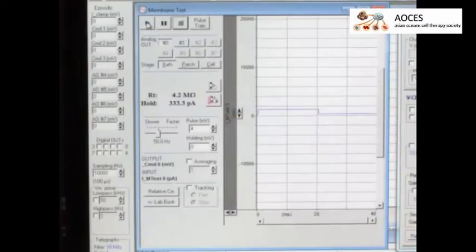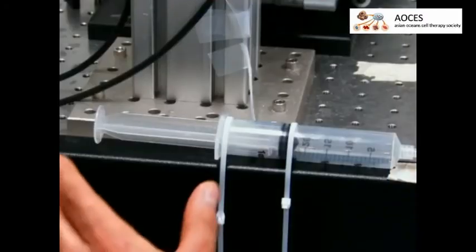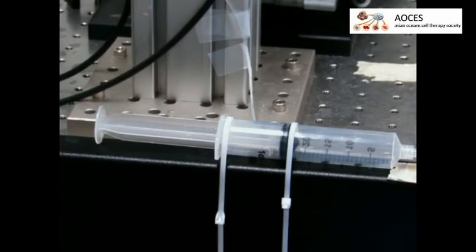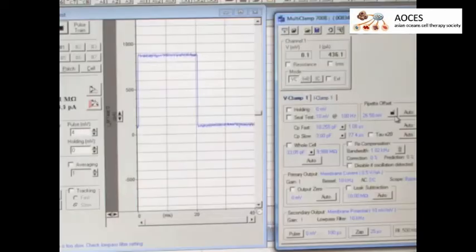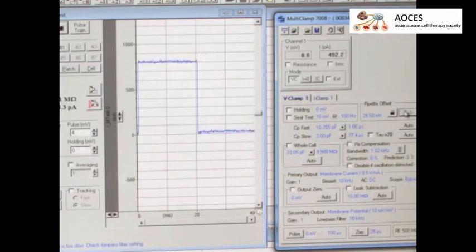In the meantime, measure the micropipette resistance by applying a voltage step. Apply positive pressure in order to remove any air bubbles or other foreign objects blocking the micropipette. After clearing the micropipette, perform a voltage offset to reduce pipette current to zero.